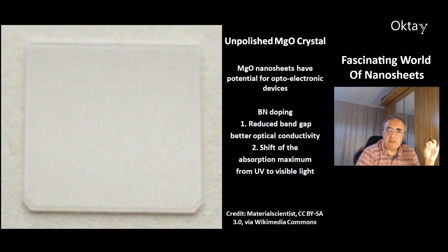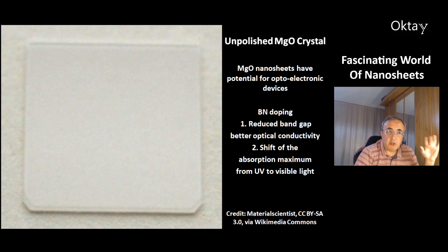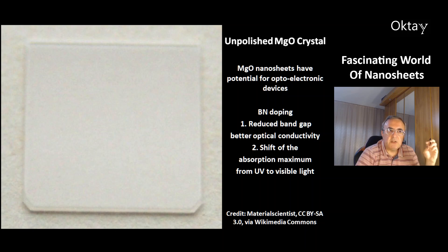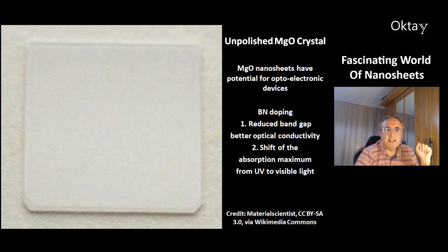This is a picture of an unpolished magnesium oxide crystal — you can also make nanosheets of magnesium oxide. They have high potential for optoelectronic devices. A variant with boron nitride doping reduces the band gap, gives better optical conductivity, and shifts the absorption maximum from UV to visible light.